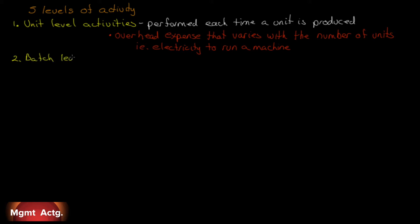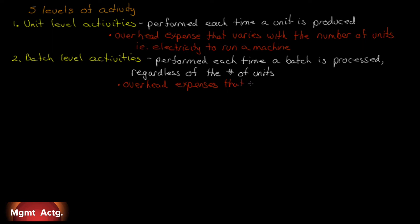We can think about batch level activities. A batch is just making a whole bunch of something at one time. These are activities that are performed each time a batch is processed, regardless of the number of units being processed. A good example here is machine setup costs. If you have to make 50 units of something or 500 units of something, you'll still have to set up the machine for that particular job. The cost occurs at the level of the batch, not the level of the unit. So overhead expense varies with the batch instead of the unit.